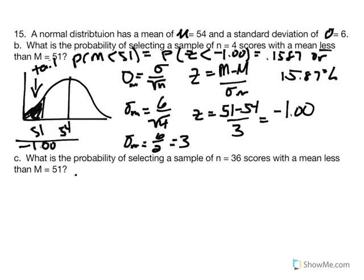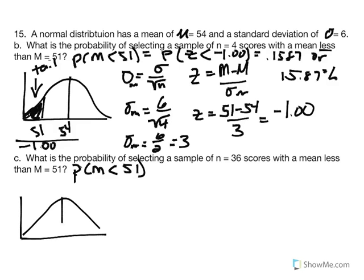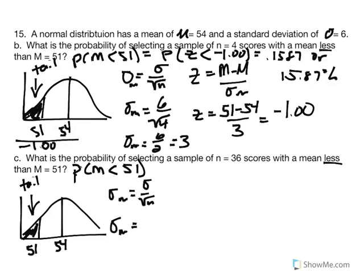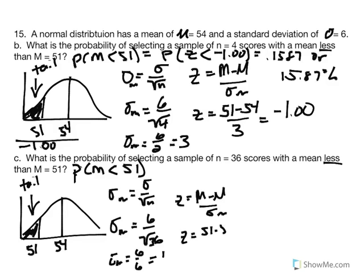We still have the probability of obtaining a sample mean less than 51. Same distribution with mean 54 and sample mean 51 — less than means it's still the tail. Standard error of the mean changes because sample size changed: 6 over the square root of 36 equals 6 over 6, giving us a standard error of 1. Our z equals 51 minus 54 divided by 1, giving us negative 3 — a very extreme z-score.